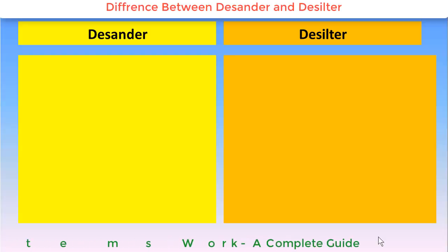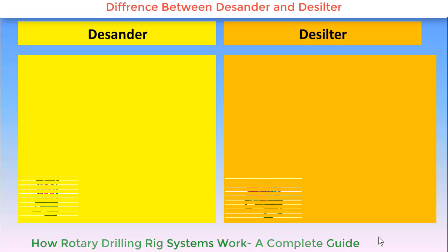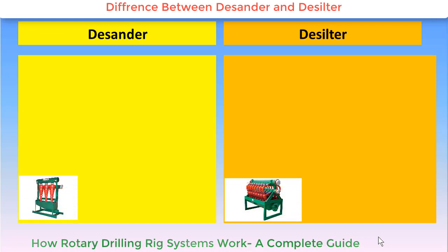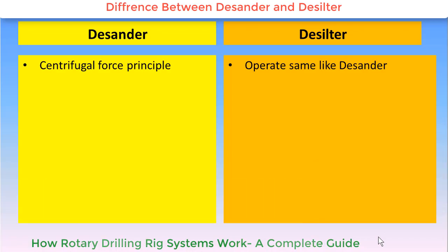The difference between desander and desilter. Desander operates on centrifugal force principle, whereas desilter also operates on the same centrifugal force principle as desander.